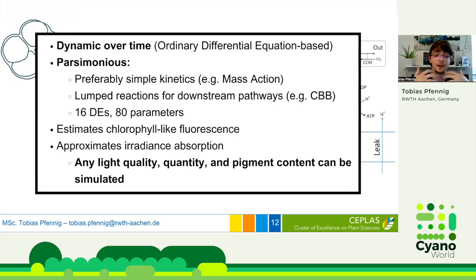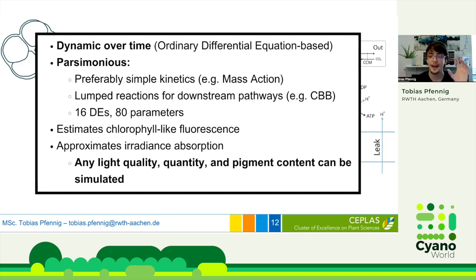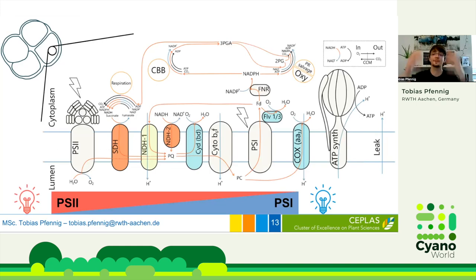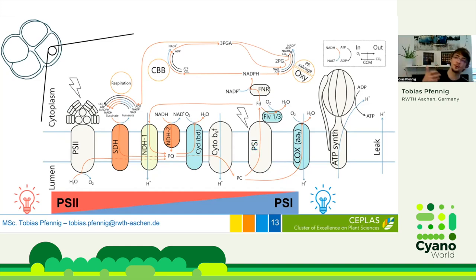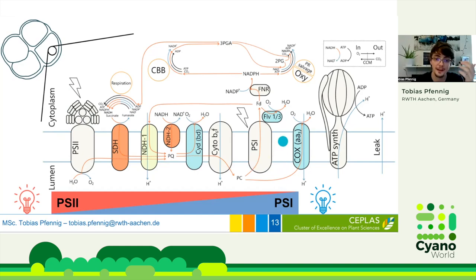As I mentioned, we approximate the irradiance absorption using a wavelength-dependent function that takes into account the different pigments of cyanobacteria. That means we can use any light quality, quantity, and pigment content in our simulations — which is exactly what we needed to answer our original question. This is important because the photosystems in cyanobacteria have significantly different light preferences: Photosystem II absorbs more in the red together with the phycobilisomes, while Photosystem I has more chlorophyll and absorbs in the blue and far-red spectrum. As the two photosystems mark entrance and exit points, changes in the spectrum drastically alter the electron pathways.